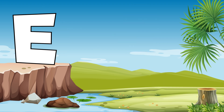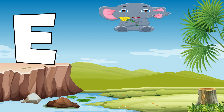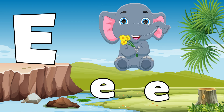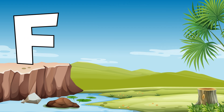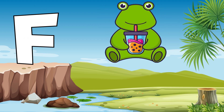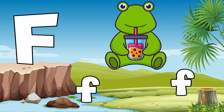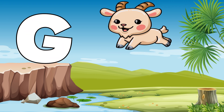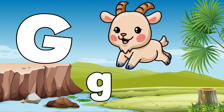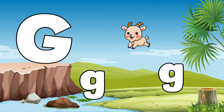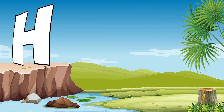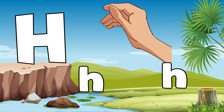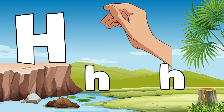E is for elephant, e-e-elephant. F is for frog, f-f-frog. G is for goat, g-g-goat. H is for hand, h-h-hand.